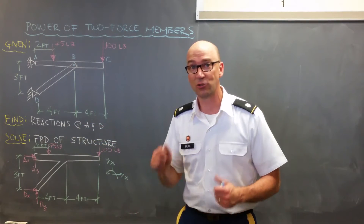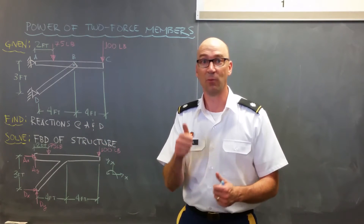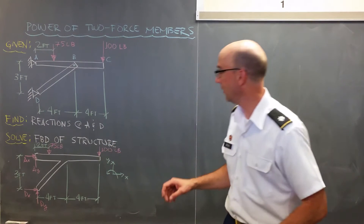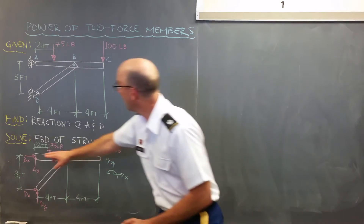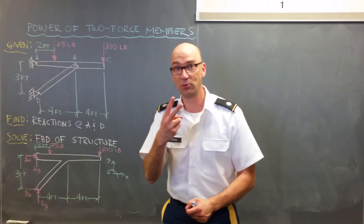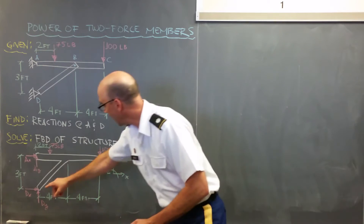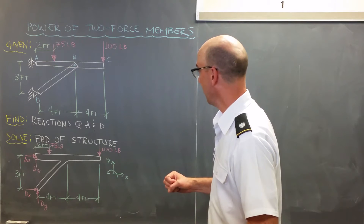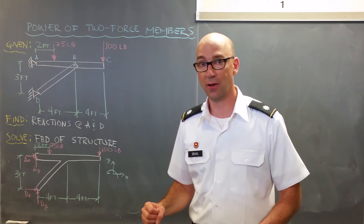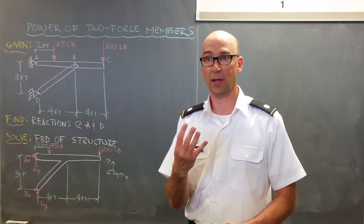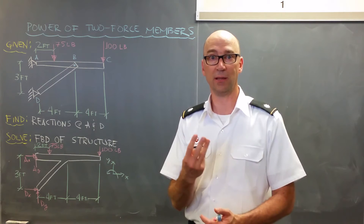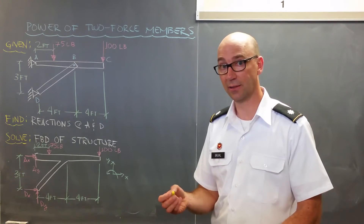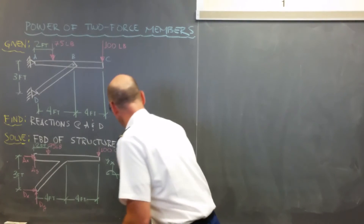The first thing I'm going to do is draw a free body diagram from which I'll write my equations of equilibrium. I got my free body diagram of the entire structure. At A it's a pin, so it has two reactions: one in the x and one in the y direction. At D it's also a pin with two reactions. I count up the unknowns — four — and I know I've only got three equations of equilibrium, so it looks like this problem is unsolvable.